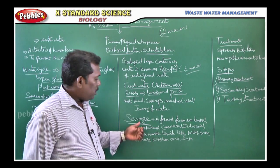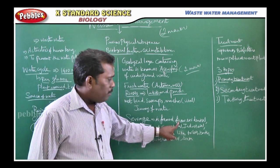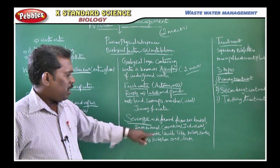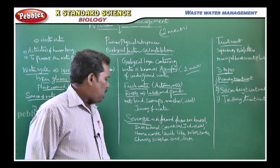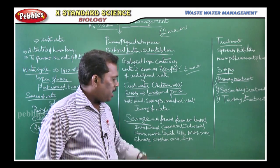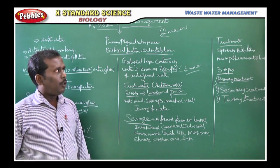Next, we are going to discuss sewage. Sewage is formed from residential, institutional, commercial, industrial house waste liquid like toilets, baths, showers, kitchen and sinks. These are all considered as sewage.